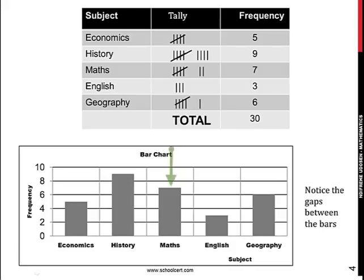Then we have that the next number is mathematics, 7. So we have 7 here. And we have English to be 3. We have our 3 here. And then we have our geography to be 6, and our geography is aligned on this. So this is the bar chart for the above data. Note the gaps between the bars for a bar chart. In bar charts, you have gaps between the bars.